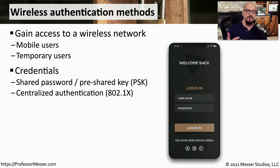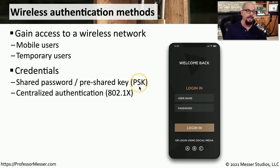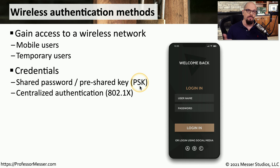There are generally two major ways to authenticate to a wireless network. The first is giving everyone the same password. We refer to this as a pre-shared key because we've created the key previously and then hand it out to anyone who needs access. These pre-shared keys are commonly used for home networks, but in a corporate environment we need additional security.